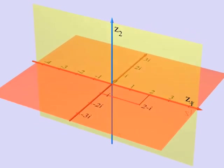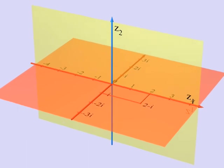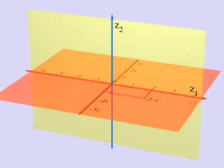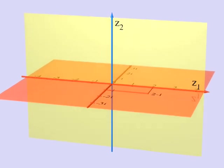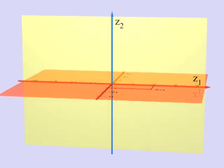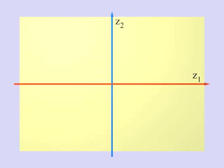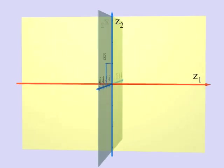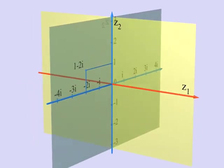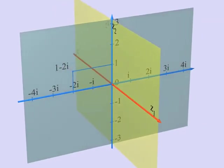For instance, here you see the point 2-i on the first axis. The same is true for the other axis, the y-axis. Here, we can see the point 1-2i on this axis.